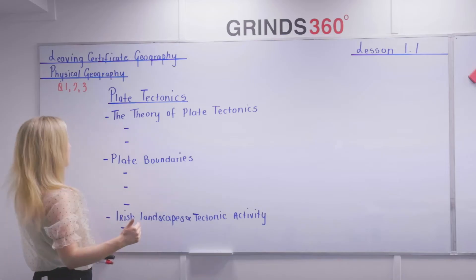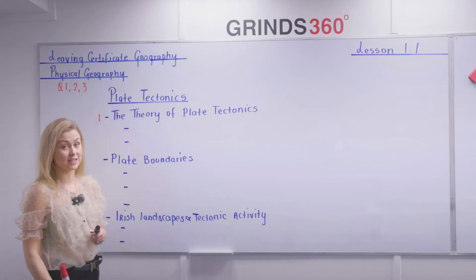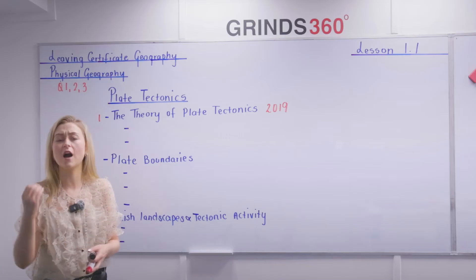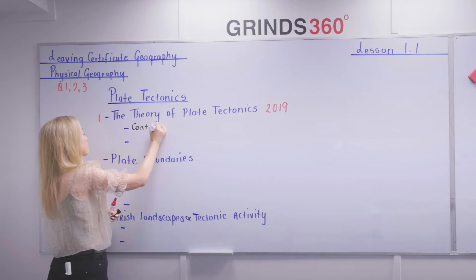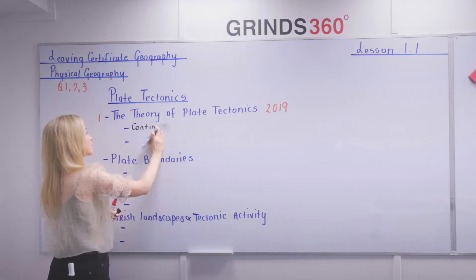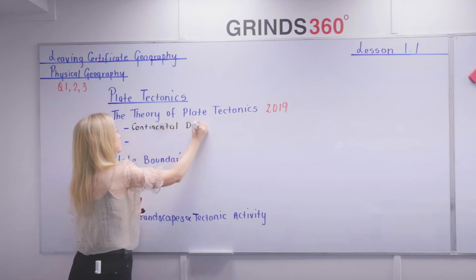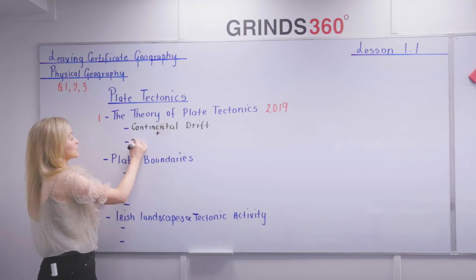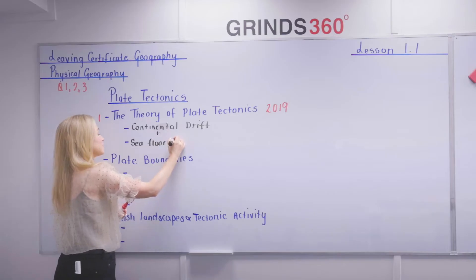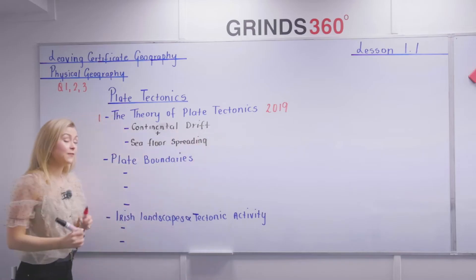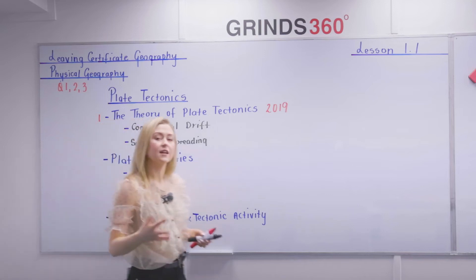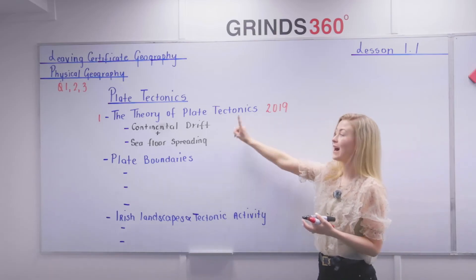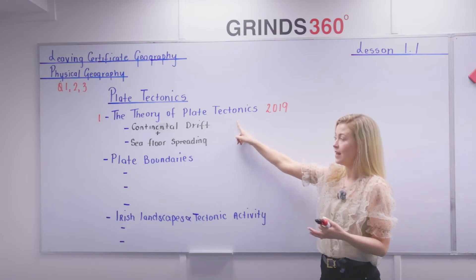Essay number one is the theory of plate tectonics, which last appeared in 2019 on the Leaving Cert exam. The theory of plate tectonics is a combination of two things: number one, the theory of continental drift, introduced by Alfred Wegener in 1912, plus the theory of seafloor spreading by Harry Hess in 1960. So for that 2019 question, we write about continental drift, seafloor spreading, and how it equals the theory of plate tectonics introduced by Vine and Matthews.